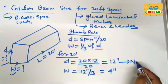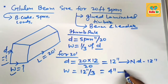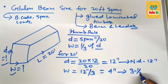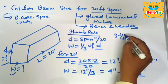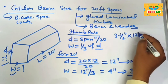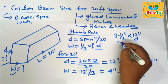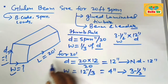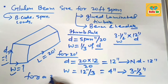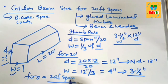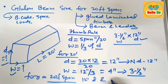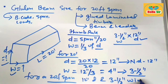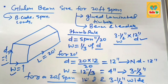The nominal depth should be 12 inches and the nominal width of the beam should be 3 and a half inches. For a 20-foot span, the correct Glulam beam size should be 12 inches deep and 3 and a half inches wide. Thank you.